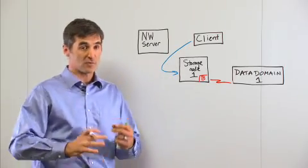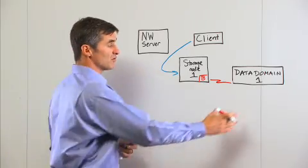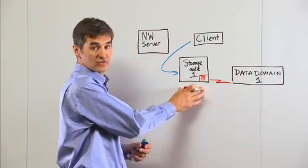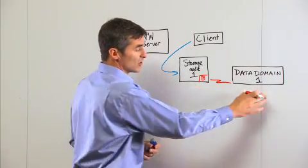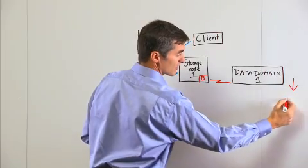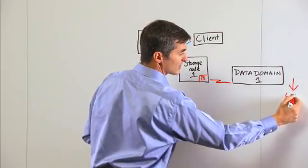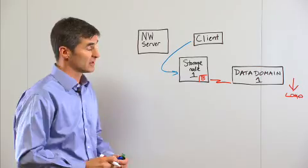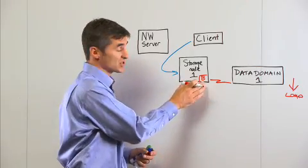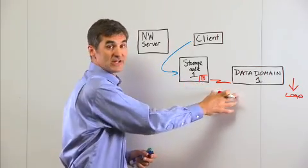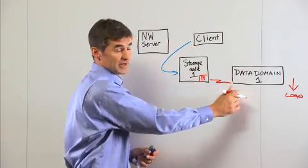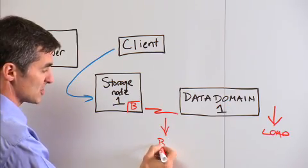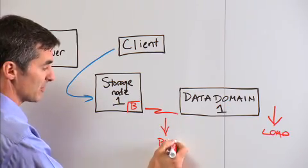From a load perspective, because we're moving some of that processing off to the storage node, we're lowering the load or the work that the Data Domain system actually has to do. Because the storage node is only moving unique data segments to the Data Domain system, it's going to require less bandwidth. So we're going to lower our bandwidth utilization.